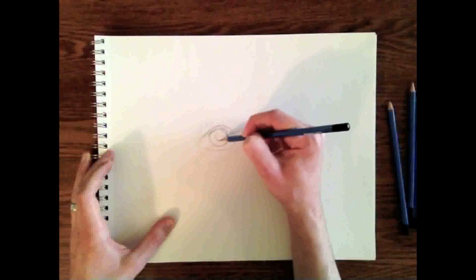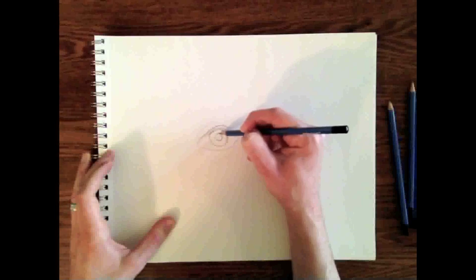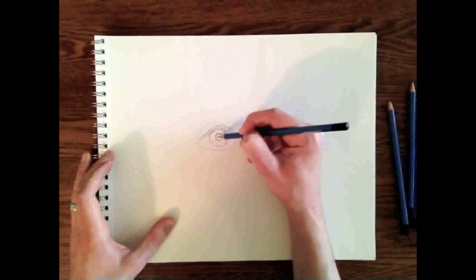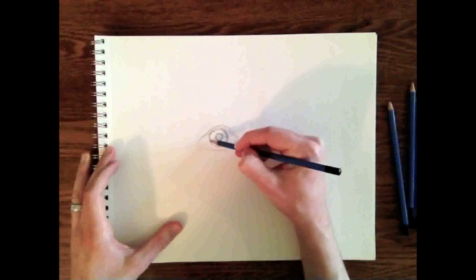It's important to keep the pupil directly in the middle of the iris. They have to be in line with one another. They can't be unique circles with different angles.